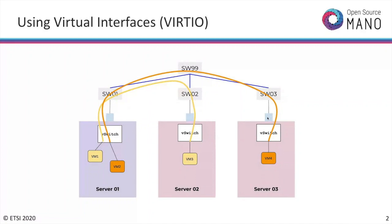OpenStack's SDN controller — one of the components of Neutron — is using a Python SDN controller under the hood. It's building these VXLAN tunnels, controlling their life cycle: creating them and tearing them down when they are no longer needed.